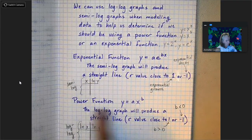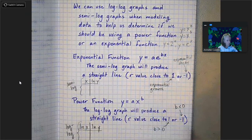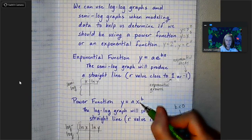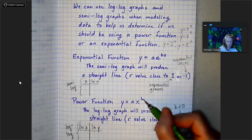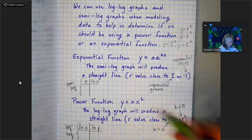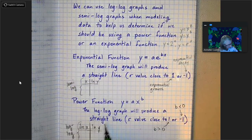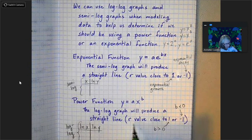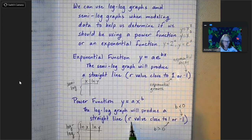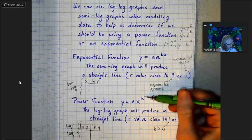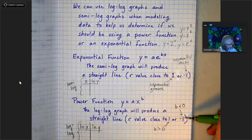Power function looks like this: y equals ax to the b. Notice the difference — exponential function, x is in the exponent; power function, x is not in the exponent. We're raising our x value to a constant power, like x squared, x cubed, x to the fourth, et cetera. The log-log graph will produce a straight line, and you can know it's straight if the r value is close to 1 or negative 1. You can get a negative 1 when b is negative — if you're raising it to a negative exponent, you're going to get an r value of negative 1.